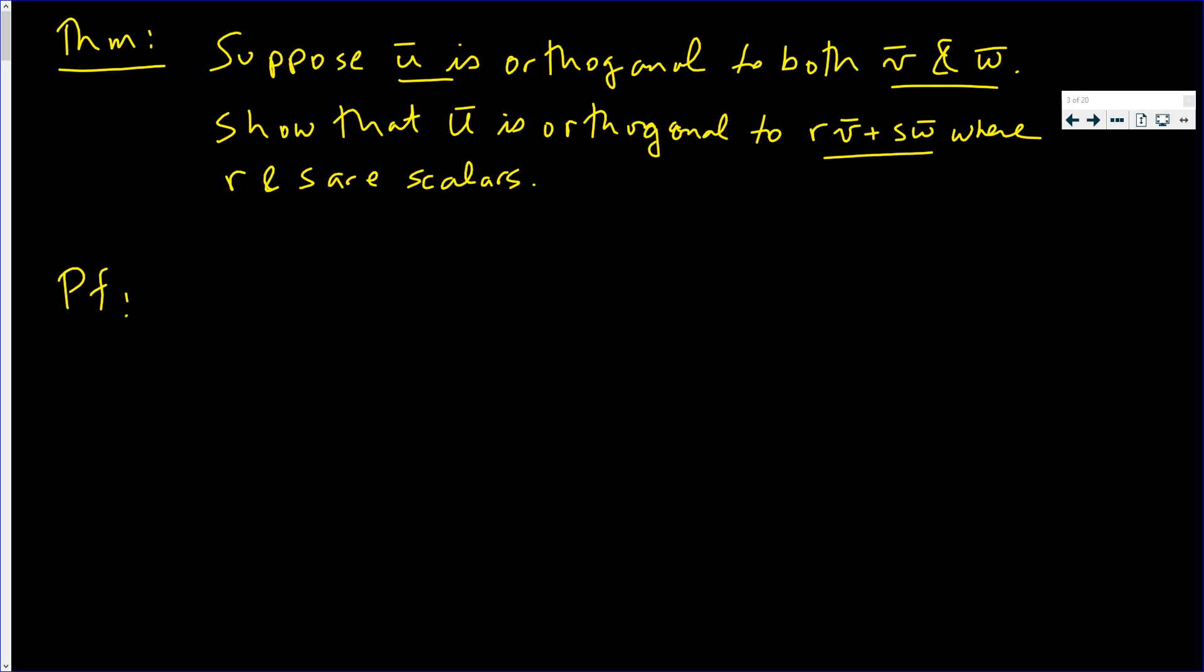Now what does it mean that u is orthogonal? u orthogonal to v implies that u·v = 0. Vector u orthogonal to vector w implies that u·w = 0.